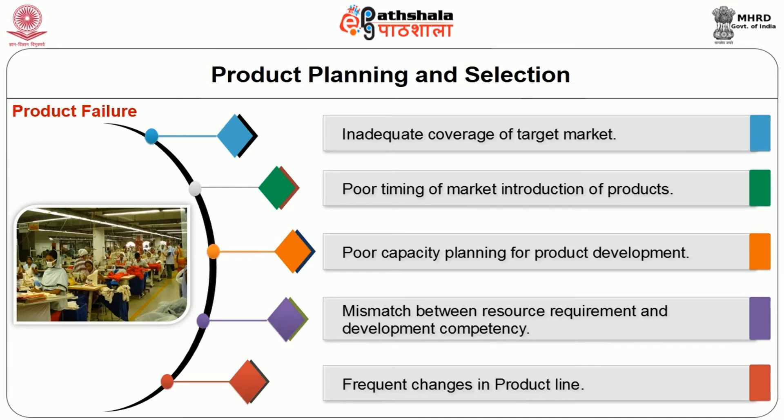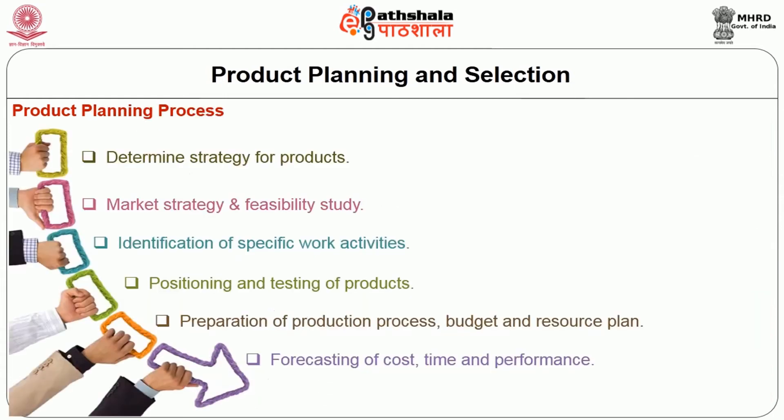Why product failure? Inadequate coverage of target market, poor timing of market introduction of products, poor capacity planning for product development, mismatch between resource requirement and development competency, and frequent changes in product line. The product planning process comprises: determining strategy for products, market strategy and feasibility study, identification of specific work activities, positioning and testing of products, preparation of production process, budget and resource plan, and forecasting of cost, time, and performance.